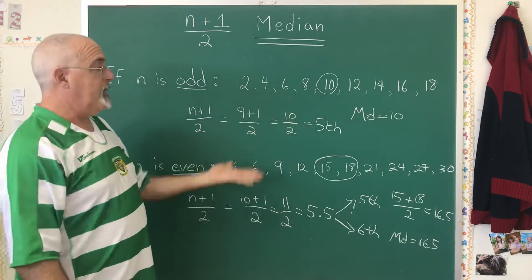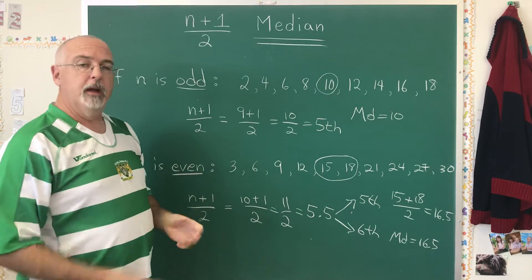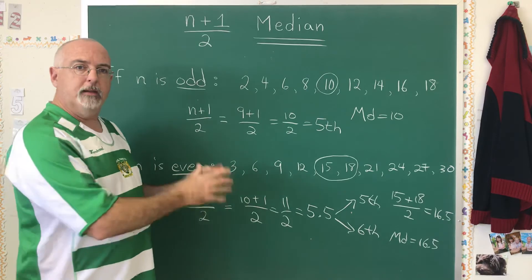These are the only two things that can happen, depending on odd number of values, even number of values. And it's very simple.